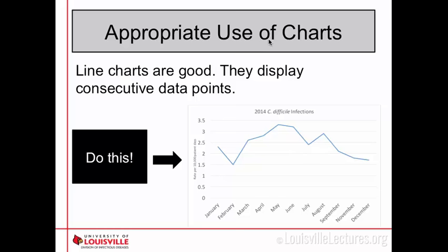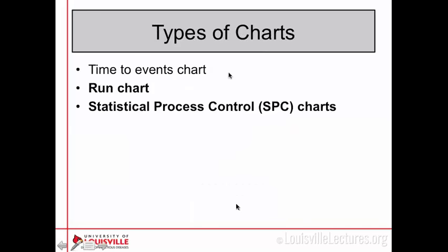There are lots of different types of line charts depending on what you have for data. One example is the time-to-events chart — if we had a really rare outcome and wanted to see how frequently we would get it, we could use a time-to-events chart that plots the time between events. If between one case you have two months, and then between the next case a week, you could ascertain whether that case was caused by the earlier one.